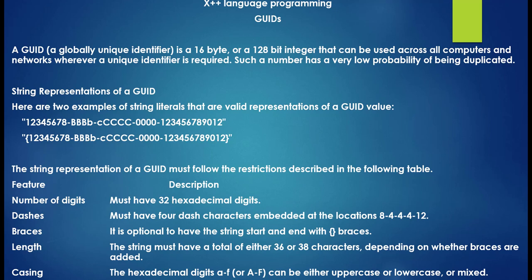There are string representations of a GUID, and here are two examples of string literals that can be valid representations. If you want to generate a GUID from a string, here are the examples we can follow. One is without an opening curly bracket, and the other has an opening and closing curly bracket — these are the two valid examples we can use.